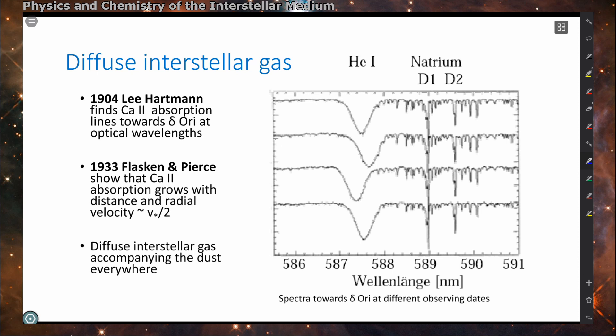Now moving on to observations of the gas, the diffuse interstellar gas was observed already in the early 20th century. Hartmann finds calcium absorption lines towards delta Ori, a star in the Orion constellation at optical wavelengths.